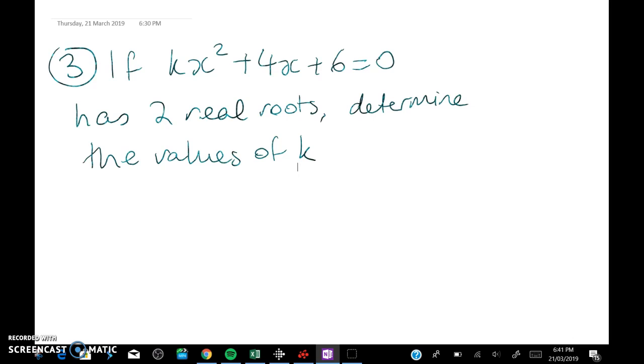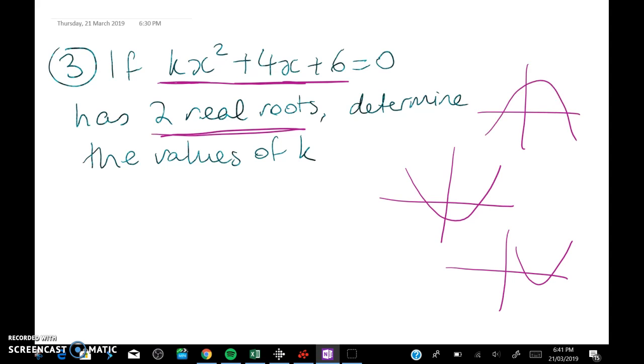So here's the first question. We've got a quadratic. If kx squared plus 4x plus 6 equals 0 has got two real roots, determine the value or values of k. So what we need to do first is to say what we're using and that's the idea of the discriminant. If it's got two real roots then it means it's crossing the x-axis twice. So that happens when we've got a discriminant which is strictly positive.